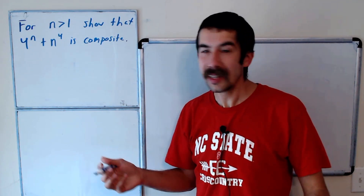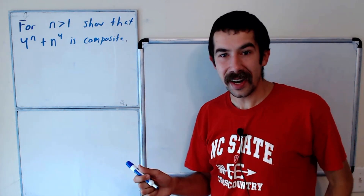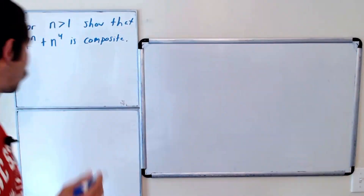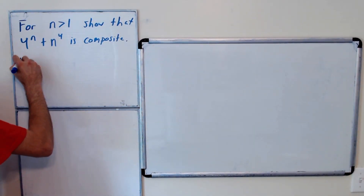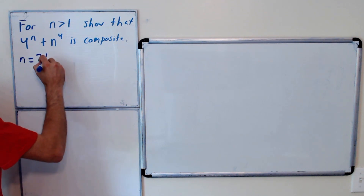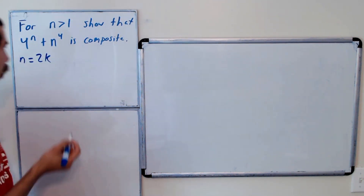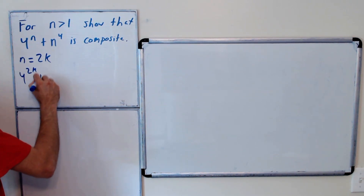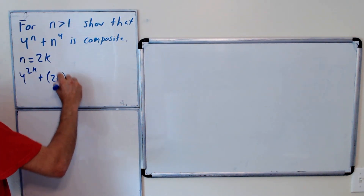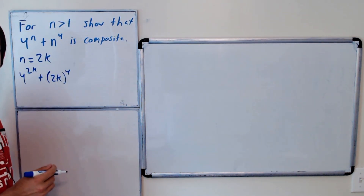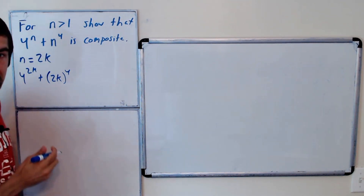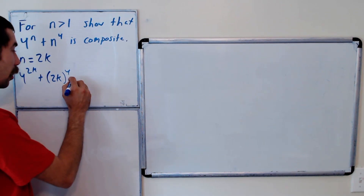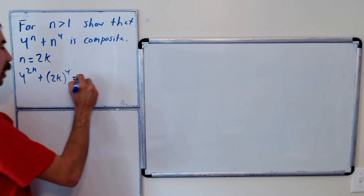Let's break this into a few cases. The first case is if n is even — that's the easy case. If n is even, n is equal to 2k for some k. And then our number is just 4 to the 2k plus 2k to the 4, which is clearly an even number, so it's going to be composite — an even number greater than 2. So we can factor out a 2.